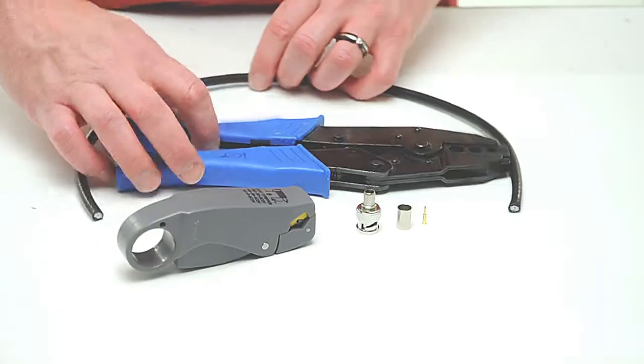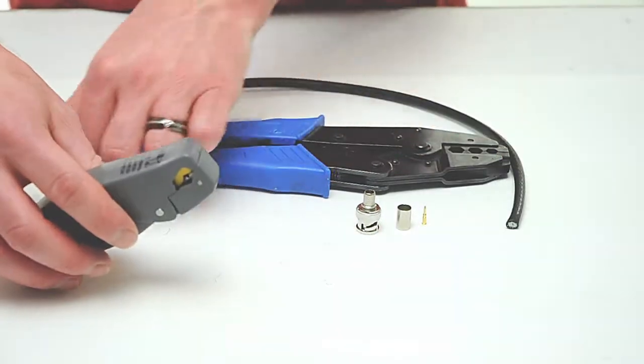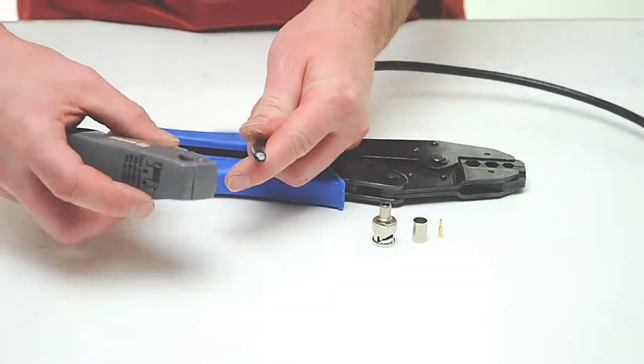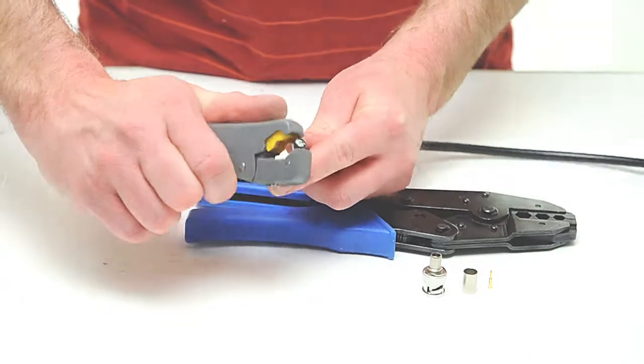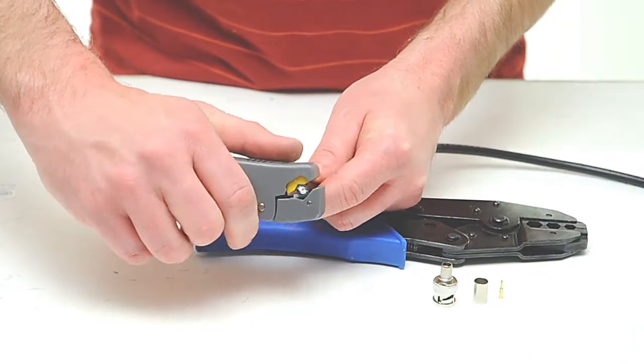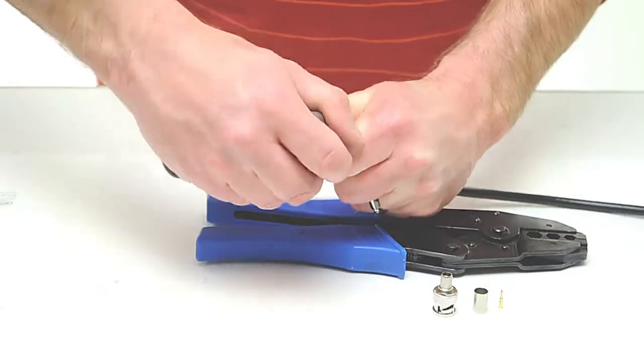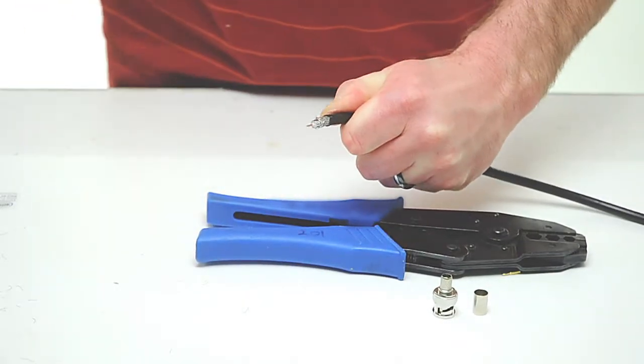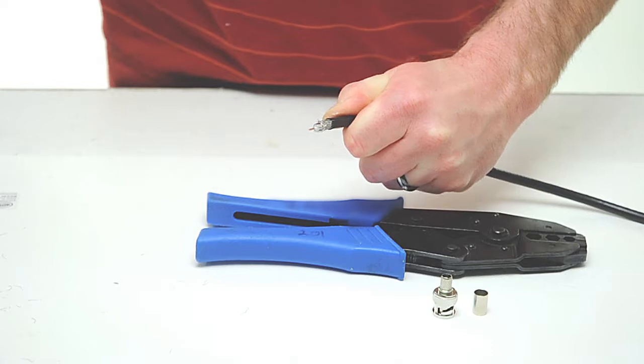To begin, take your coax stripper and remove the outer jacket and dielectric of the cable. The advantage of using a coax stripping tool is that it cuts both the outer jacket and dielectric at the same time. Rotate the tool a few times around the outside of the cable and peel the jacket off.